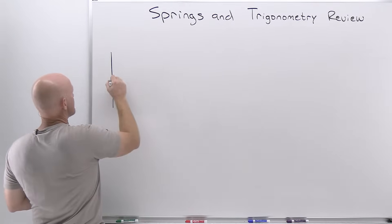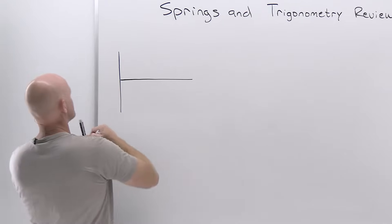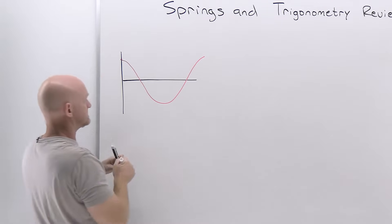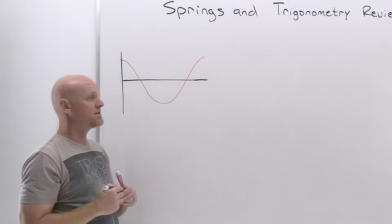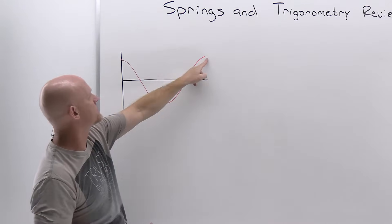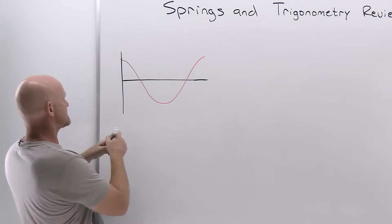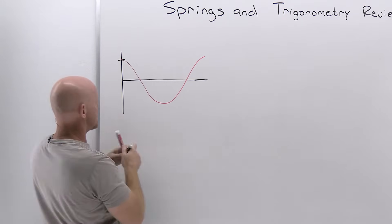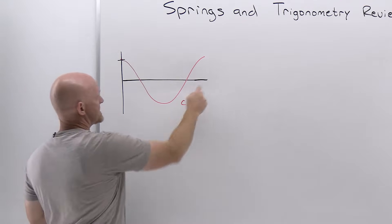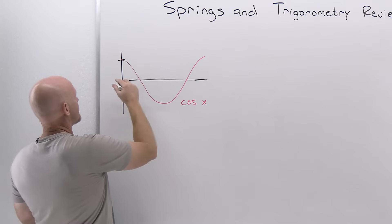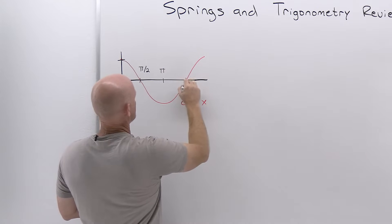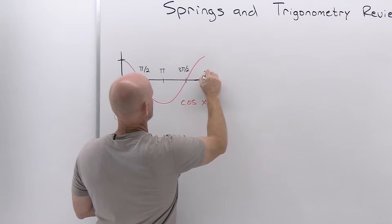Starting with the cosine function: the cosine function starts off at its maximum at zero, then ends at its maximum after completing one full oscillation, and then alternates back and forth as a wave. For one complete oscillation until it returns to its initial position, we're plotting cosine of x — or cosine of theta — and we go from zero to pi over 2, pi, 3 pi over 2, and then 2 pi.